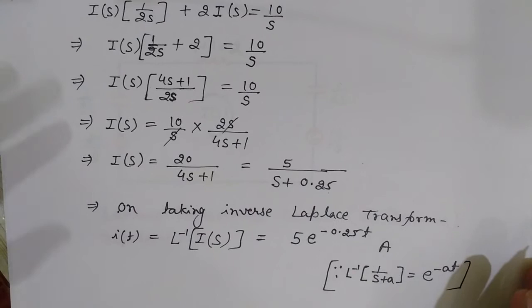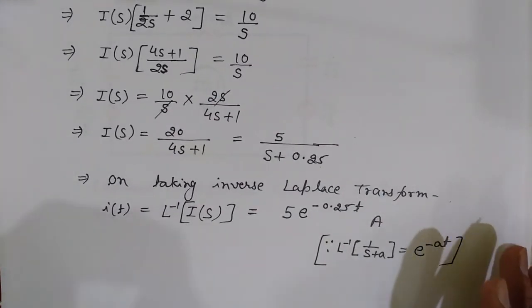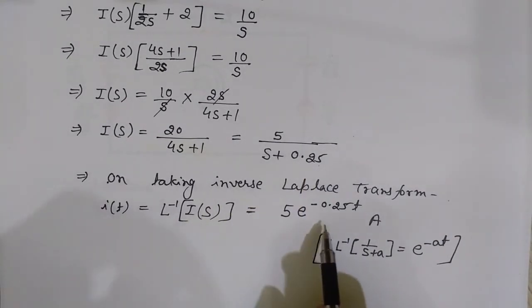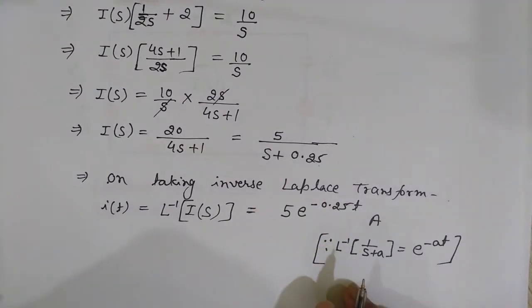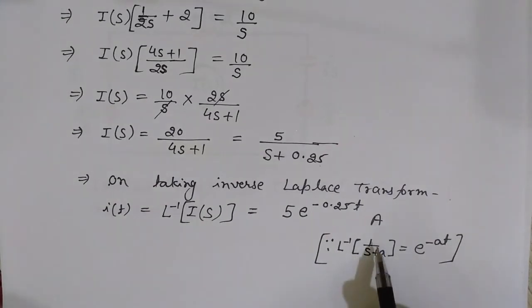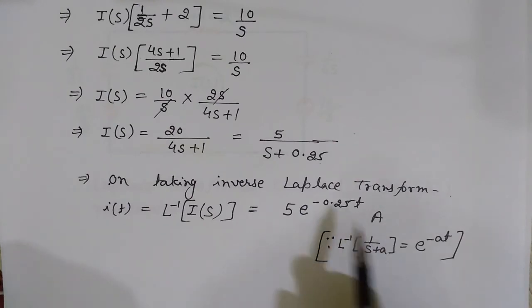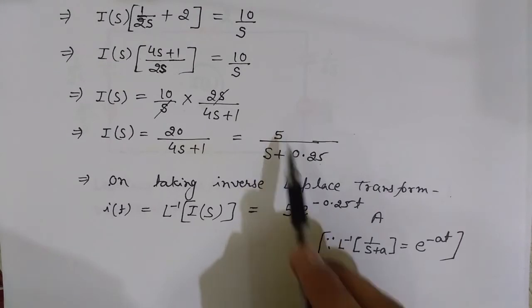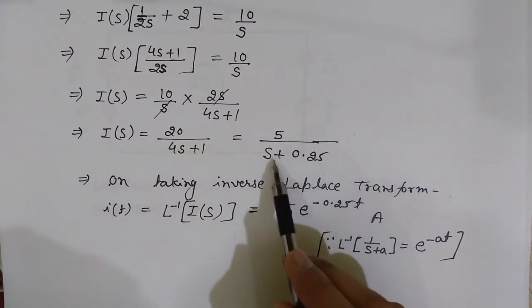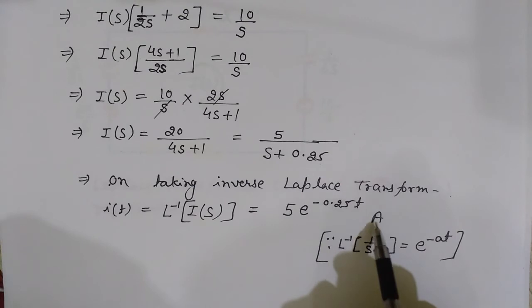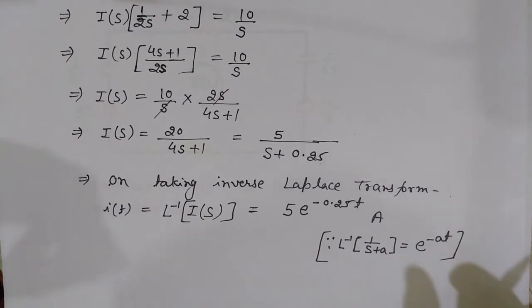I(s) is the current in the S-domain. To get the current in the time domain, I take the inverse Laplace transform. Using the formula: inverse Laplace of 1/(s+a) = e^(−at), with a = 0.25, the result is i(t) = 5·e^(−0.25t) amperes.